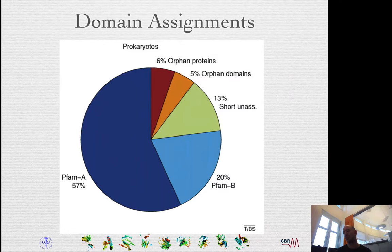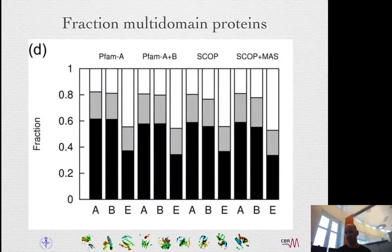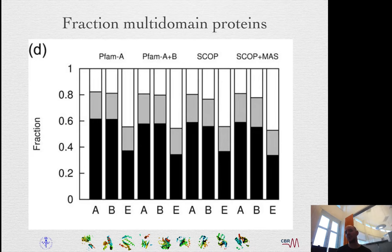Prokaryotes have much more P5MA coverage and fewer fractions of orphans. If you look at the number of domains per protein, single-domain proteins are shown in black, two-domain proteins in grey, and three or more domain proteins in white in the bar chart.